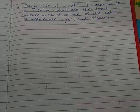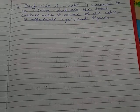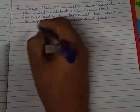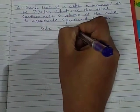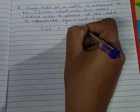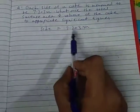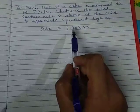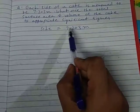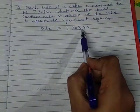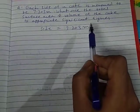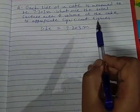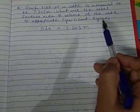Now the cube has the side 7.203 meters. How many significant figures are there? 1, 2, 3, 4 — there are 4 significant figures. Now what do you have to find? You have to find the total surface area and volume.